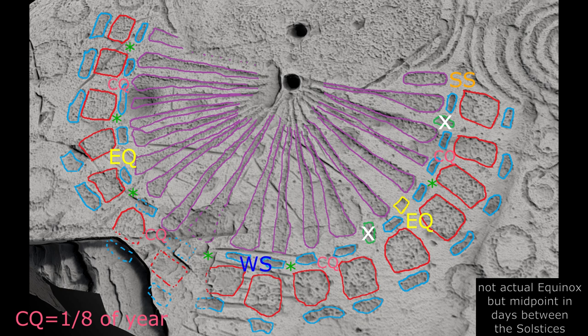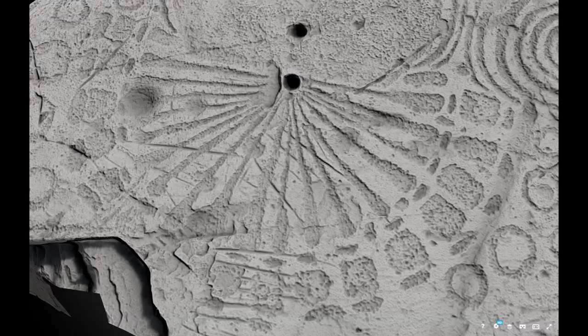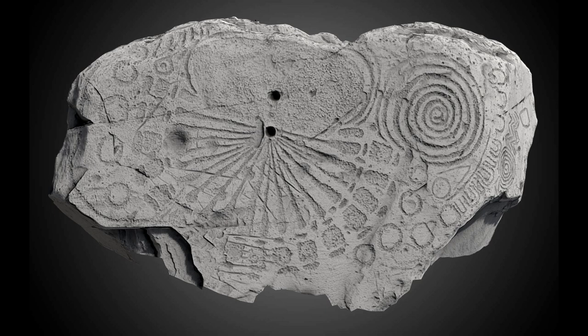It seems likely these markings have some connection to a 16-part division of the year, regardless of which specific interpretation is used. If any of these inferences are on the right track, it is likely that remaining symbols on the stone have other astronomical or calendrical meanings, and there are other stones with similar motifs.